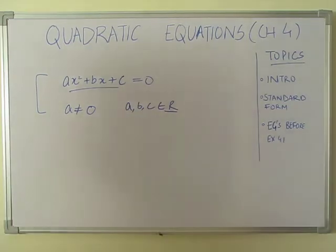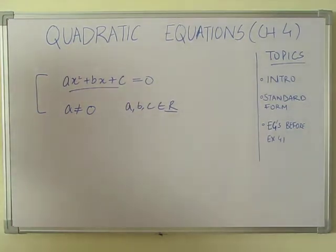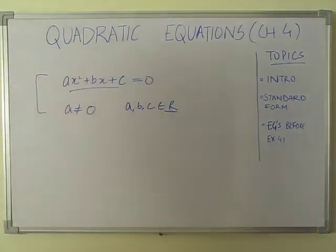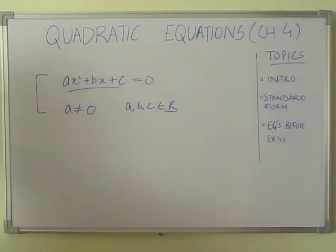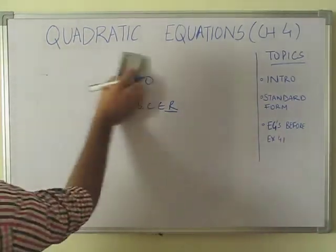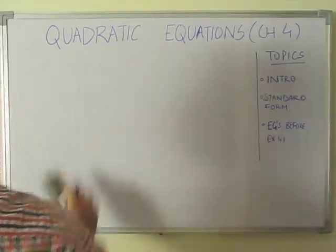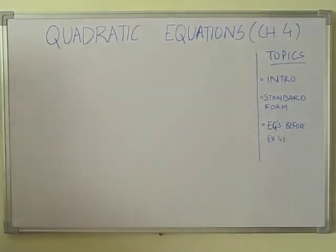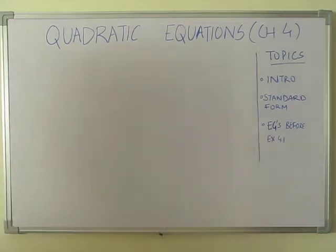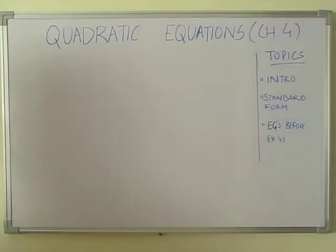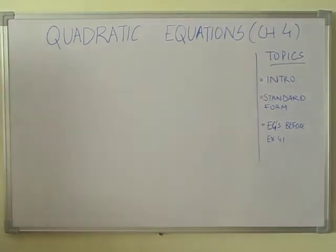Now we will see the examples for clarity. Example number one from exercise 4.1: John and Juvanti together have 45 marbles. Both of them lost 5 marbles each, and the product of the number of marbles they now have is 124. We would like to find out how many marbles they each had to start with.